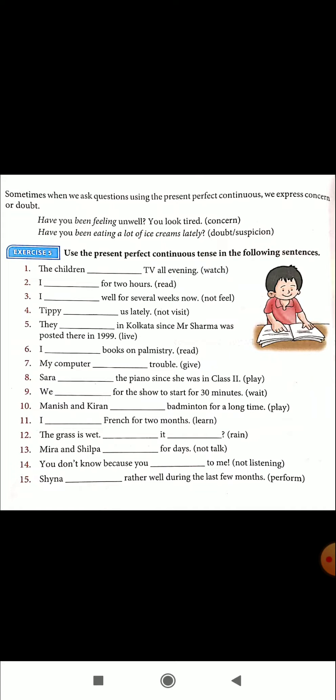Exercise five: use the Present Perfect Continuous Tense in the following sentences. 'The children watch TV all evening' becomes 'The children have been watching TV all evening.' 'I have been reading for two hours.' 'I have not been well for several weeks now.' 'TP has not been visiting us lately.' Do the remaining exercises by yourself.